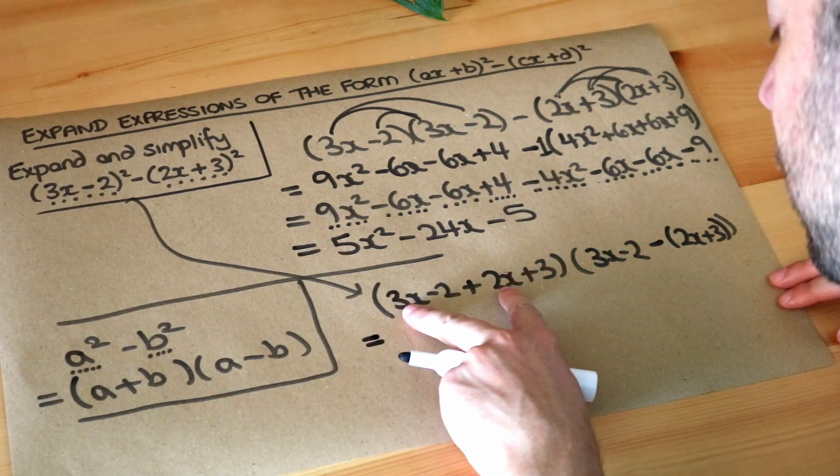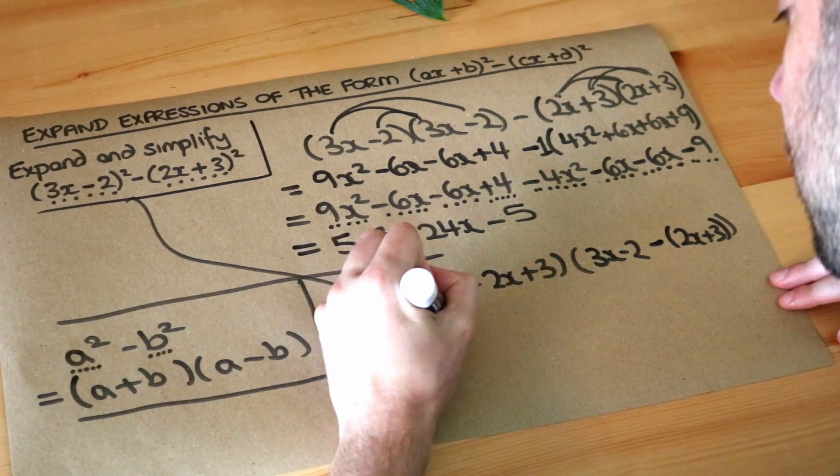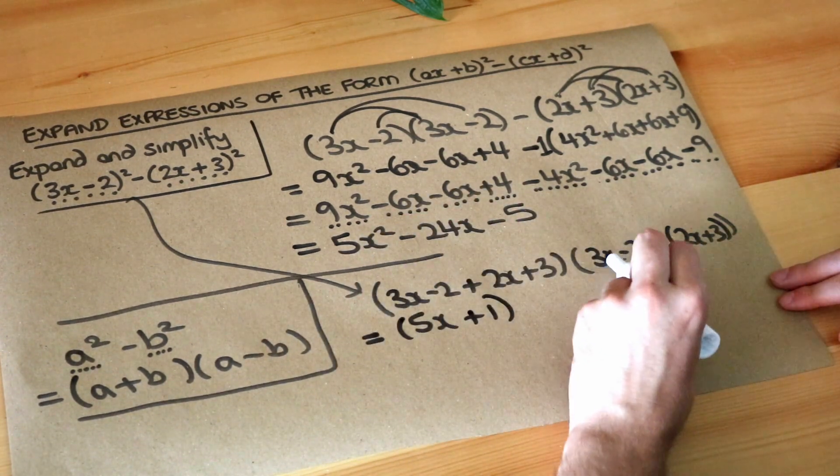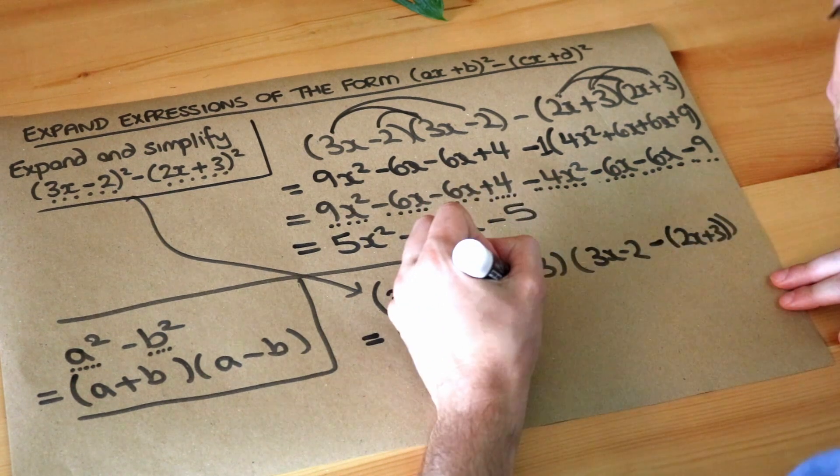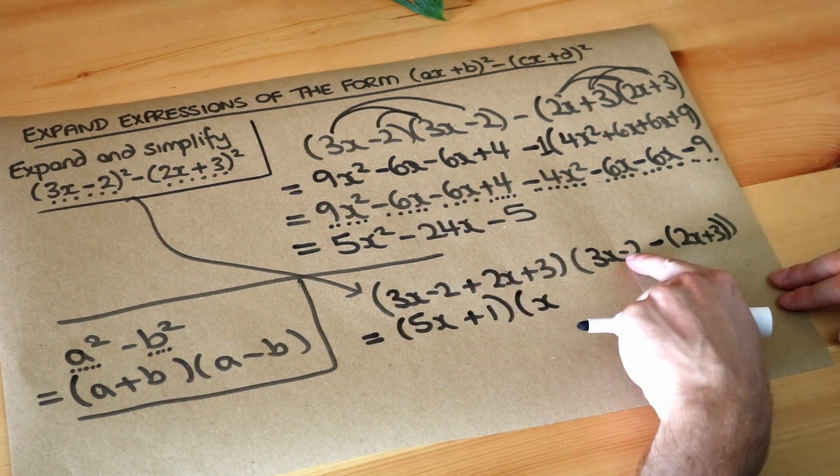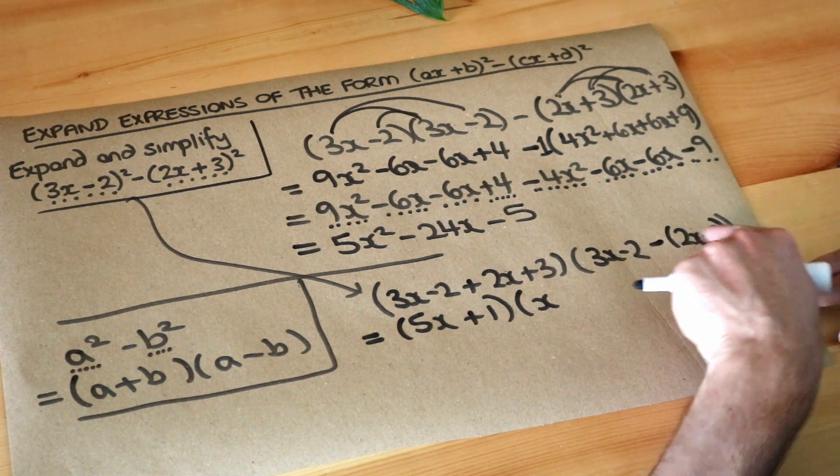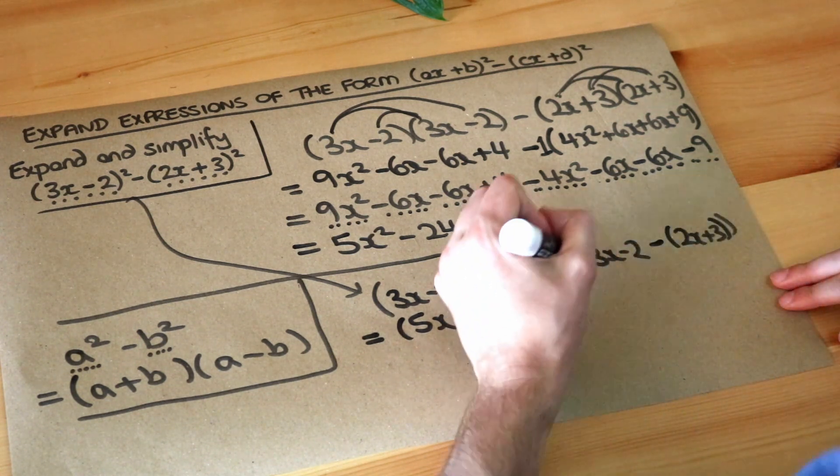And then we can just simplify. So we've got 3x + 2x is 5x, -2 + 3 is +1. We've got 3x - 2x which is just x. And this is where we have to be careful. It's -2 and it's -3 because that minus affects that 3 inside the bracket. So -2 - 3 is -5.